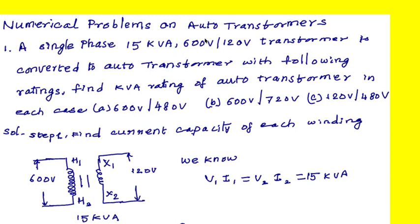Let me draw the two-winding transformer parameters. This is a step-down transformer — 600 volts primary, 120 volts secondary. Let me assign high voltage winding terminals as H1, H2, and the LV winding represented with X1 and X2. For a transformer, the kVA rating whether measured at primary or secondary side remains the same: V1·I1 = V2·I2 = 15 kVA. The primary voltage is 600 volts and secondary voltage is 120 volts.